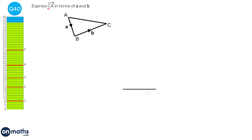We're asked to go from C to A. We can't go straight there, so we go down road B backwards (that's minus b) and then backwards down road a (that's minus a). Our answer is minus b minus a, or more traditionally in alphabetical order: minus a minus b.